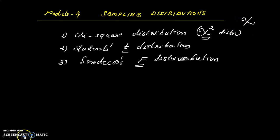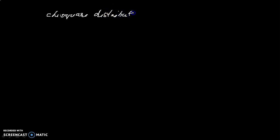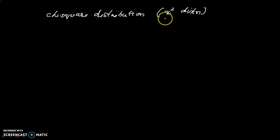First, the chi-square distribution. Let's show the notation for chi-square distribution. Note that it is chi-square — not x-square — it is chi-square. This is the chi-square distribution.